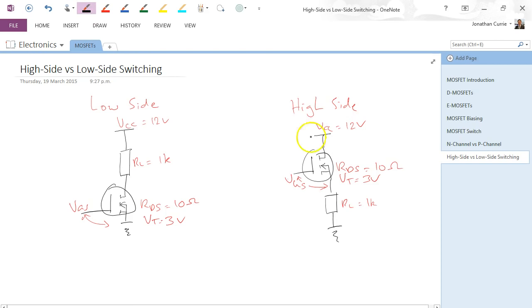Let's take the example of the high side switch to begin with. We can work out what the current would be based on that circuit there. So, ID is equal to VCC over RL plus RDS. And we could, for example, then work out what's the voltage drop across RL. So, VRL would be equal to VCC times RL over RDS plus RL.